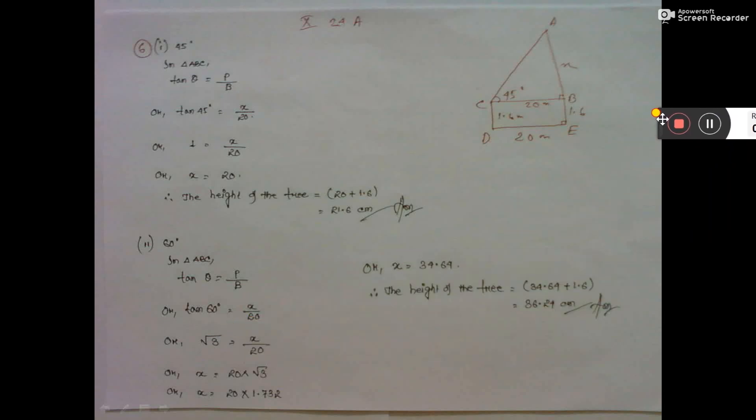A boy 1.6 meters tall is 20 meters away from a tower. AE is the tower, and this is the boy, 1.6 meters tall.